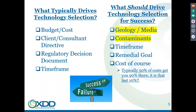When I'm looking at site data and deciding what technology might be most applicable, there are a number of factors to consider. Cost is always a major factor. Two things I really look at are the detailed geology and the detailed characterization of the contaminant. The other important factors are timeframe to meet a goal and cost.